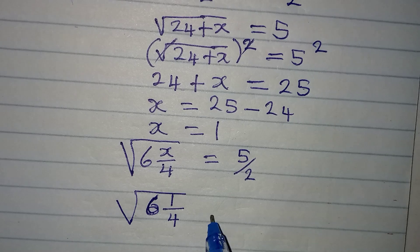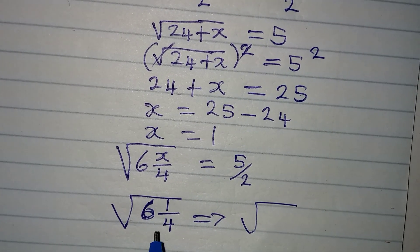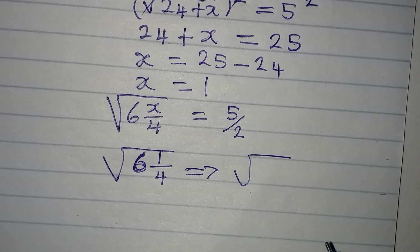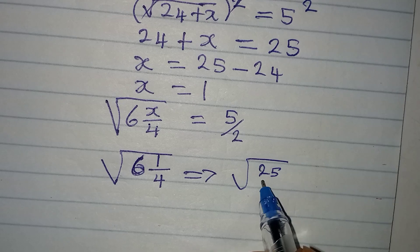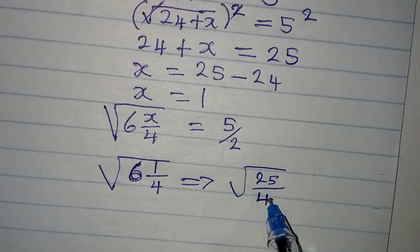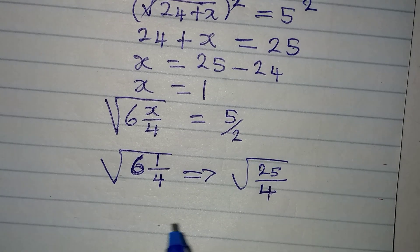Let's convert this to improper form so that we will have 4 times 6, that is 24, plus 1. We have 25 over 4. This is improper, but we have to do it this way so that we can find the square root.